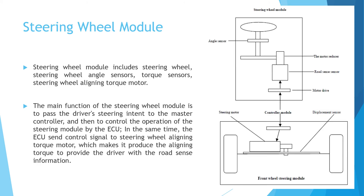The steering wheel module includes the steering wheel, steering wheel angle sensor, torque sensor, and steering wheel aligning torque motor. The main function of the steering wheel module is to pass the driver's steering intent to the master controller and then to control the operation of the steering module by the electronic control unit. At the same time, the ECU sends a control signal to the steering wheel aligning torque motor, which makes it produce the aligning torque to provide the driver with road sense information.